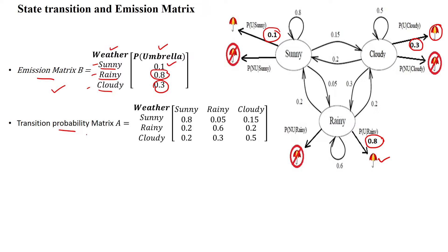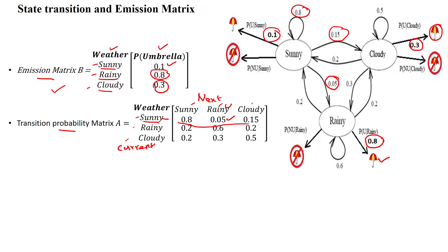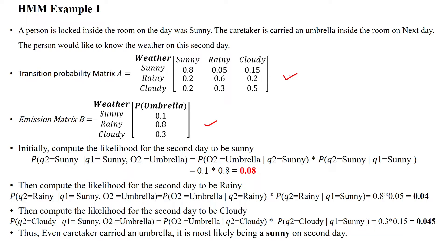Next, we construct the transition probability matrix. With three states, we take a 3×3 matrix where rows represent the current state and columns the next state. From sunny to sunny: 0.8; from sunny to rainy: 0.05; from sunny to cloudy: 0.15 — summing to 1. From rainy to sunny: 0.2; rainy to rainy: 0.6; rainy to cloudy: 0.2. We can similarly fill in the remaining entries to complete the transition probability matrix.